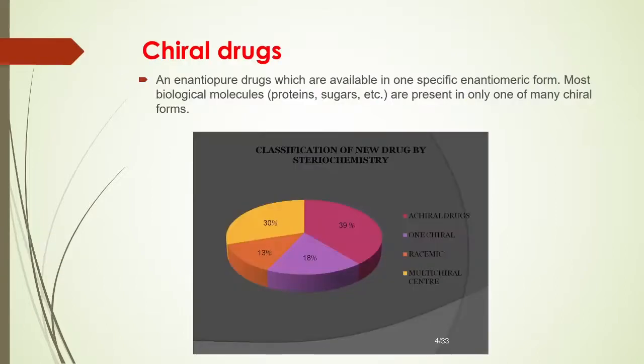Chiral drugs are enantiopure drugs which are available in one specific enantiomeric form. Most of the biological molecules such as proteins, sugars, and enzymes are also present in only one of many chiral forms. So enantiopure drugs are called chiral drugs.